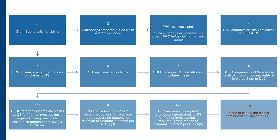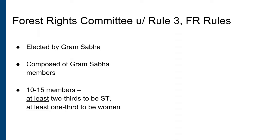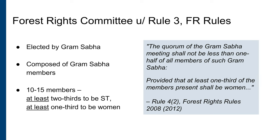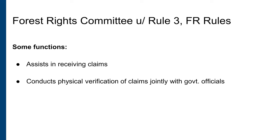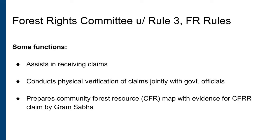Let's look at the Forest Rights Rules and what these say about participation of forest-dwelling communities in the claims process. The Gram Sabha constitutes a Forest Rights Committee or FRC of 10 to 15 members from the Gram Sabha. The details of the FRC's composition are shown on the screen. Rule 4-2 lays down what constitutes the quorum for the Gram Sabha meeting. People who are not members of the Gram Sabha cannot be part of the FRC. The FRC assists the Gram Sabha in receiving the claims along with supporting evidence and conducts the physical verification of the claims jointly with the Forest and Revenue Departments. The FRC reports back to the Gram Sabha and also prepares a Community Forest Resource Map along with substantial evidence, which then becomes the basis for the approval of a CFR claim by the Gram Sabha through a majority resolution. For more information on CFR rights and claims, you can check out Nagarek Learning's online course on Community Rights and Forest Governance.